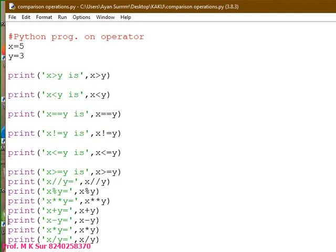And another operator is x star star y. A single star means multiplication, but double star means it will calculate power, meaning 5 to the power 3 that means 125.